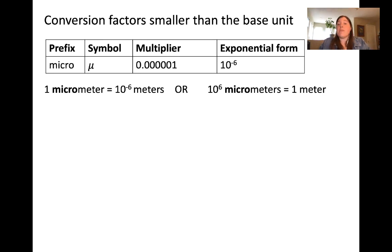For conversion factors smaller than the base unit, this can be a little bit more complex to conceptualize. What the multiplier means here is there's a very small number of the base unit in this particular prefix. So this tells us that there's 0.00001 meters in a micrometer. That's shown here in this first conversion.